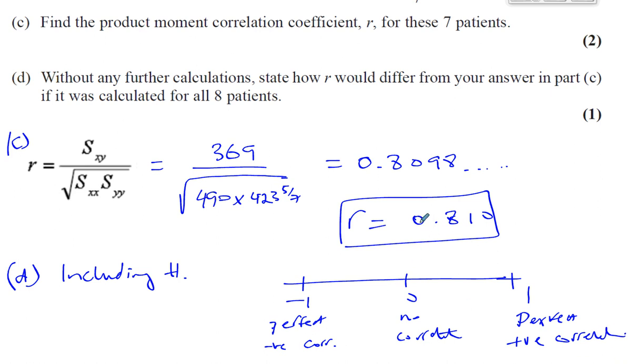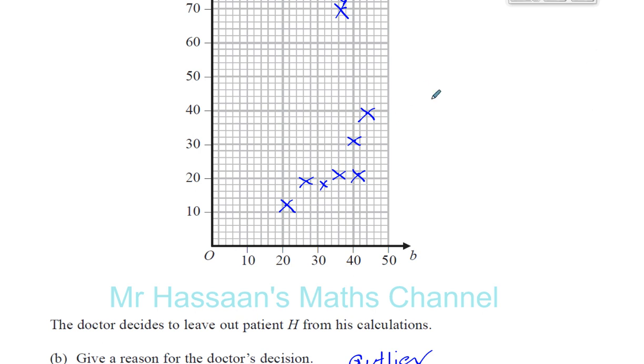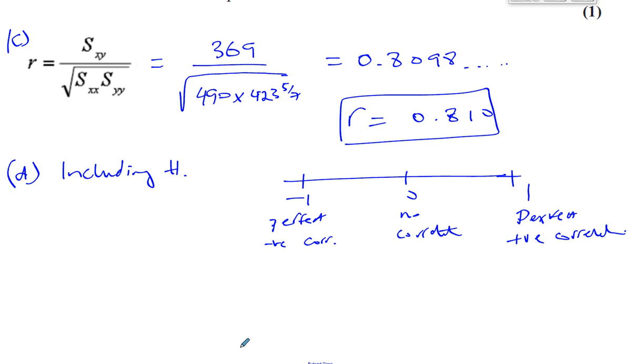And when you have R as positive 1, it's perfect positive correlation. So this is quite close to perfect positive correlation. But if you include H, which is outside, you can see from the graph, it's outside of our straight line. The line of best fit would go through here, and the points are quite close to that straight line. This is way outside from that straight line. So it will cause the value of R to become less close to 1. Still positive, but less close to 1. So the value of R will decrease, but it will still be positive. So it will decrease and get closer to 0. It won't go to the negative side. So you should mention something about it decreasing, getting closer to 0, being closer to no correlation. The correlation will become weaker.